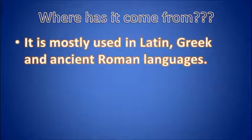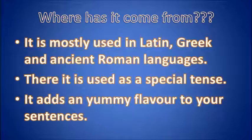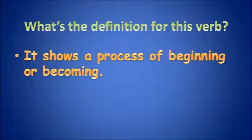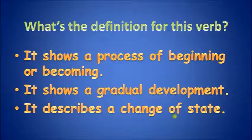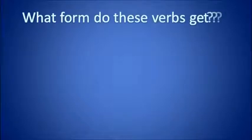Where has it come from? It is mostly used in Latin, Greek, and ancient Roman languages, where it is used as a special tense. The definition: it shows a process of beginning or becoming. It indicates a gradual development and describes a change of state — from somewhere it makes a journey, suggesting a gradual transformation.